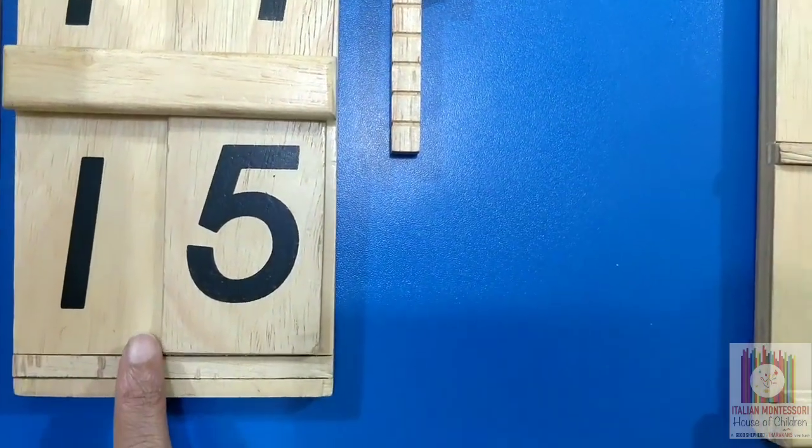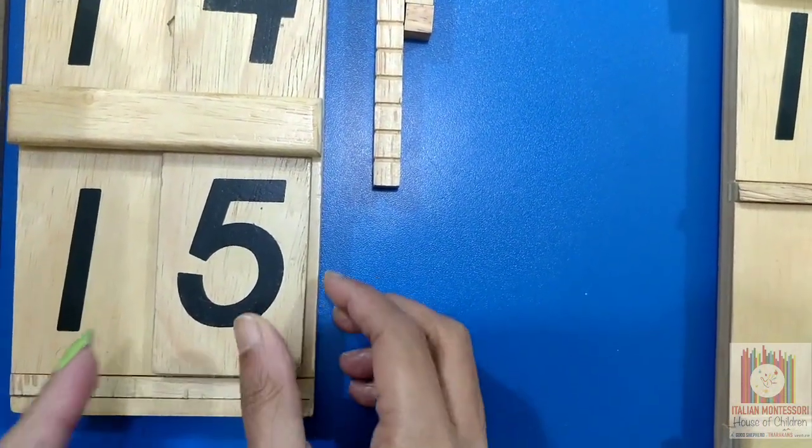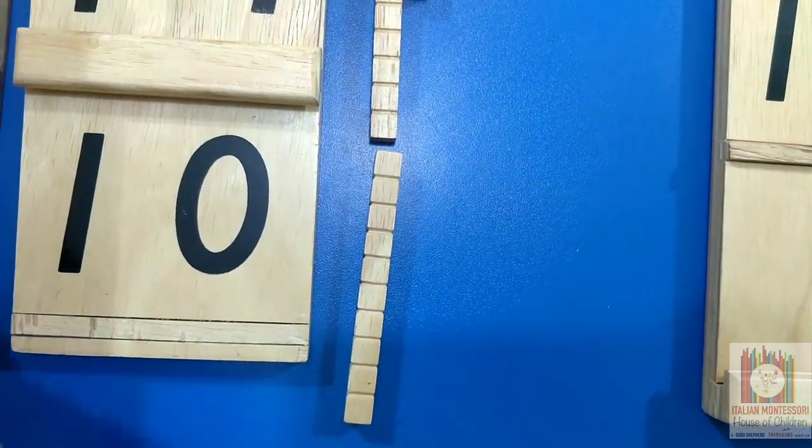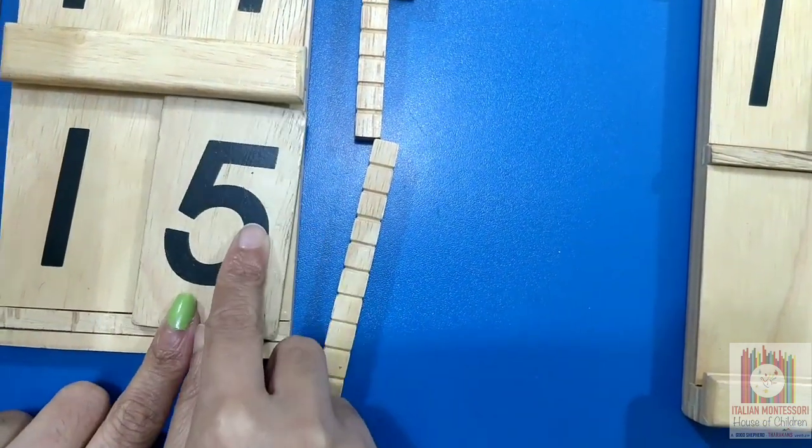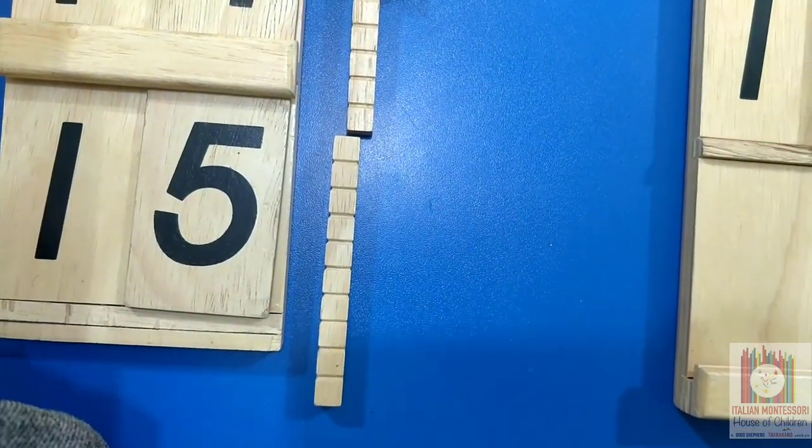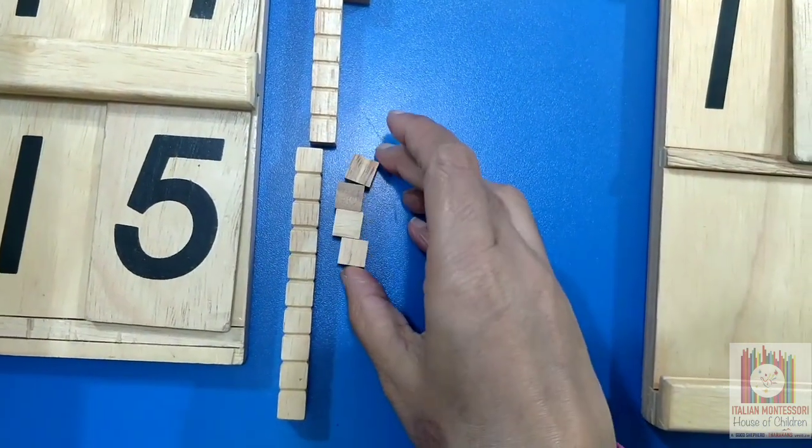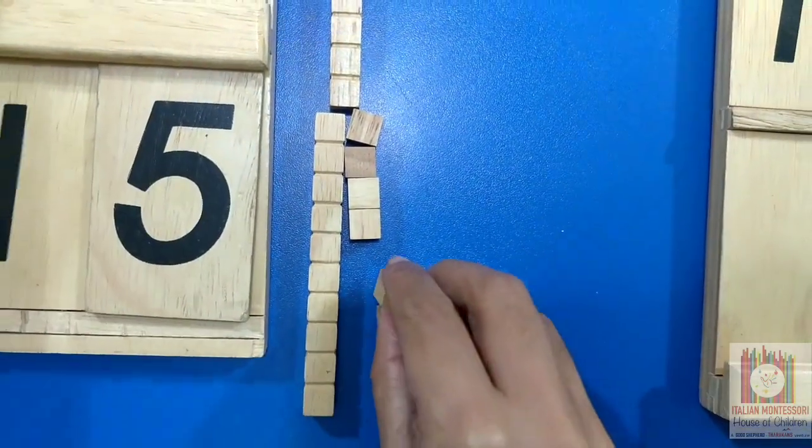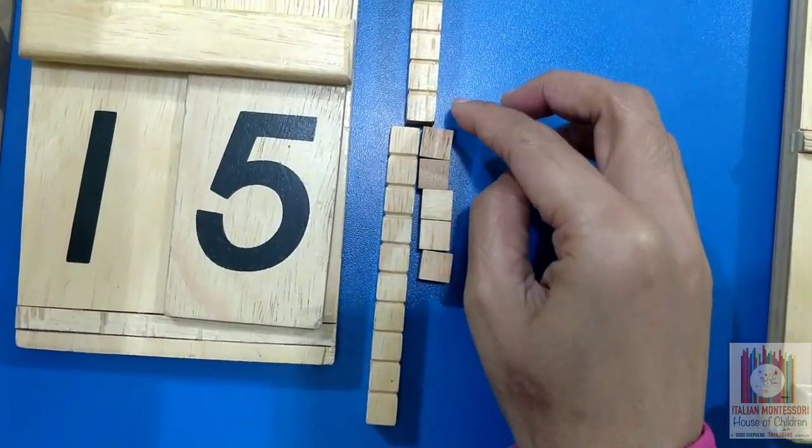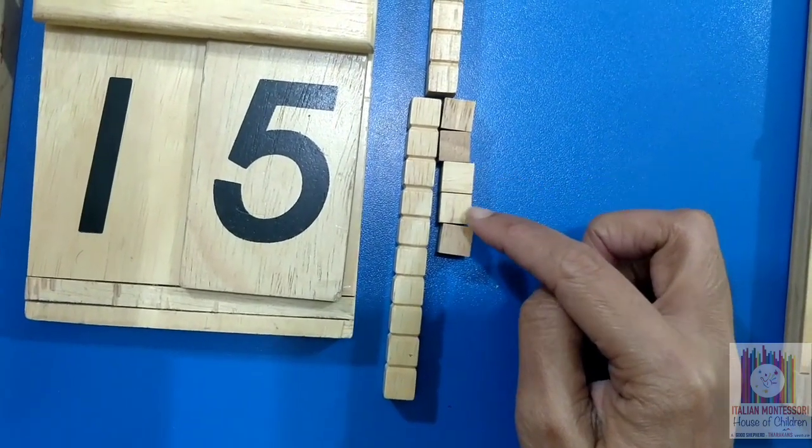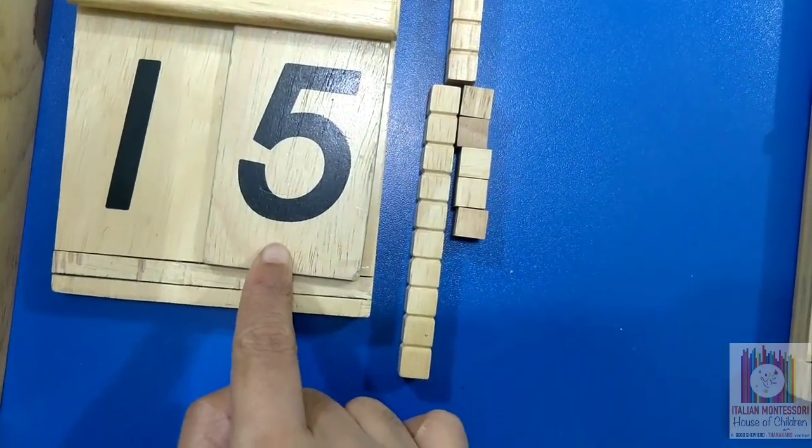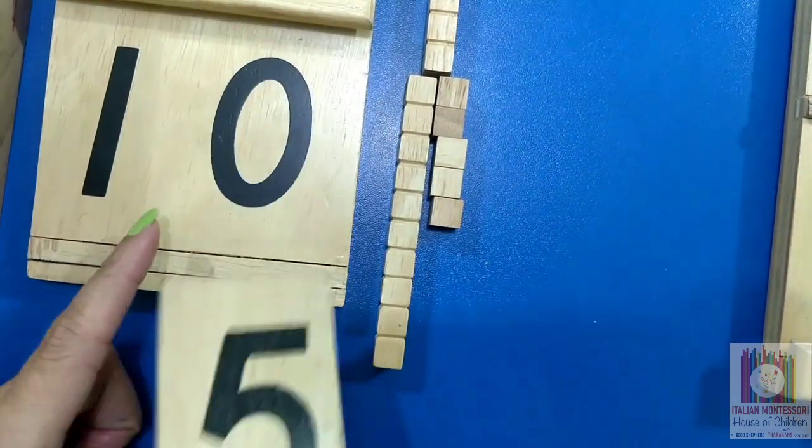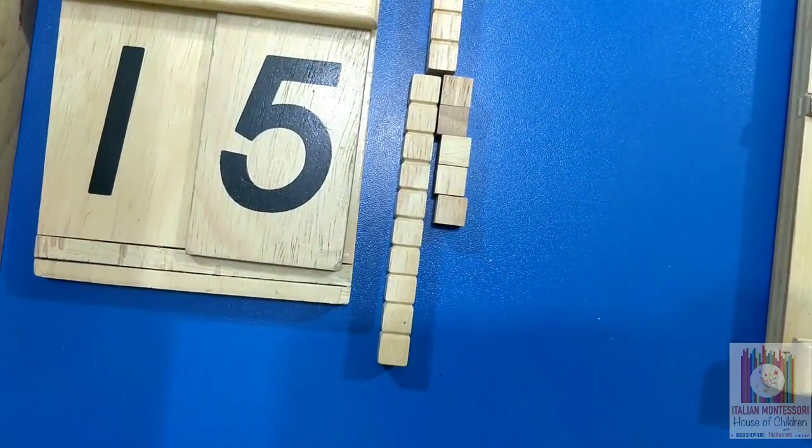This is number 15. 1, 10. This is 1, 10 and 5 units makes 15. 1, 10 and 5 units makes 15. So 1 unit, 2 units, 3 units, 4 units, 5 units. This 5 units we have kept here and this is 1 ten. So 1 ten and 5 units makes 15.